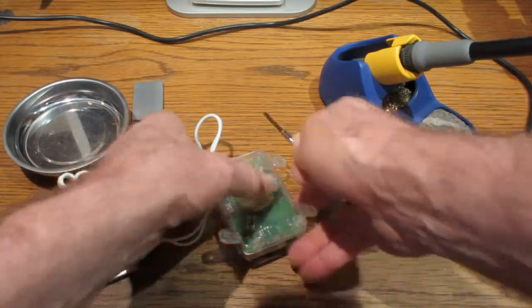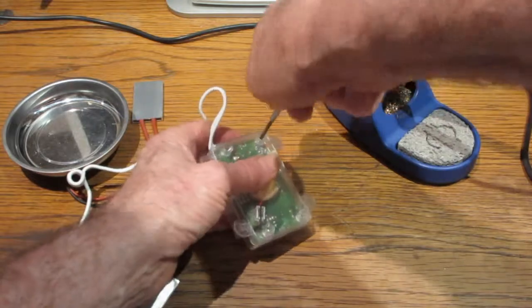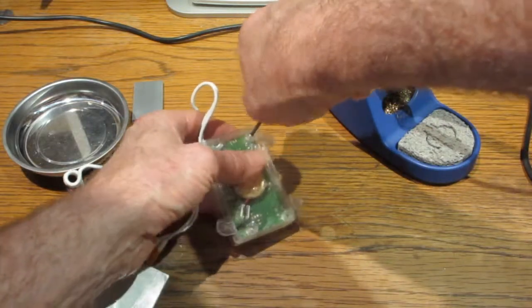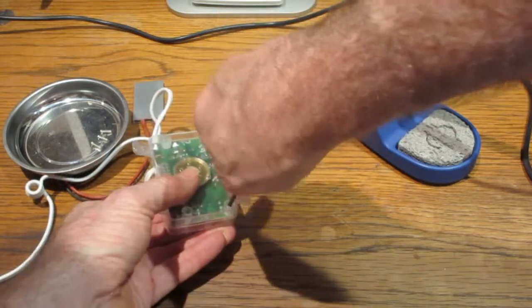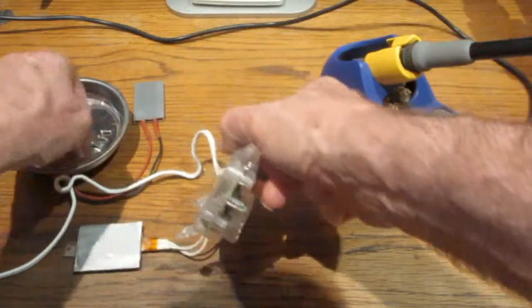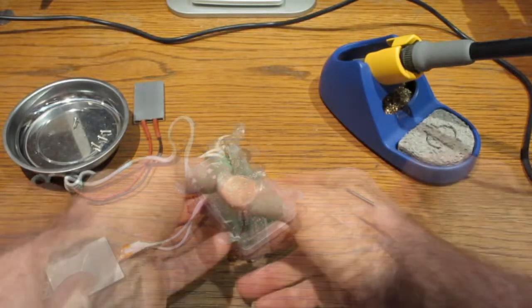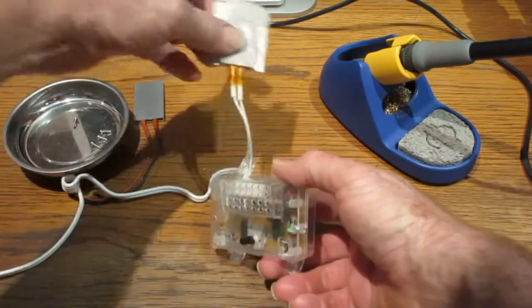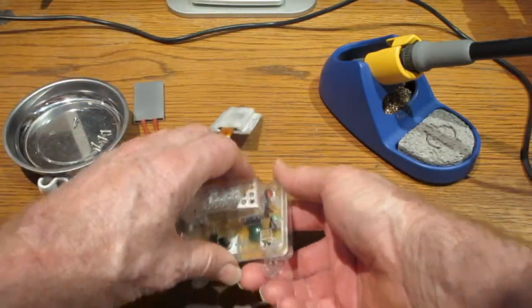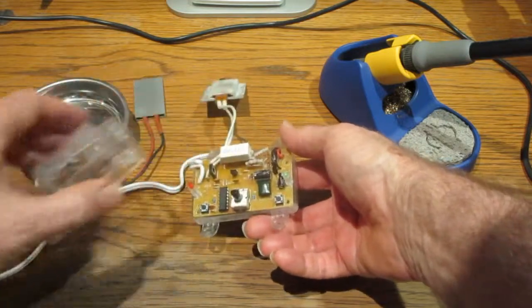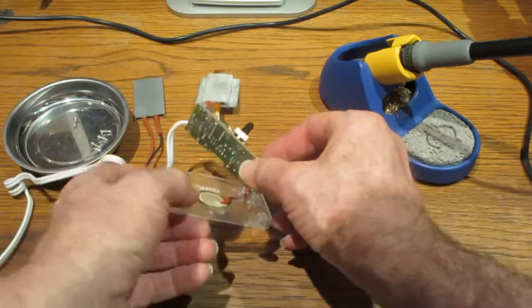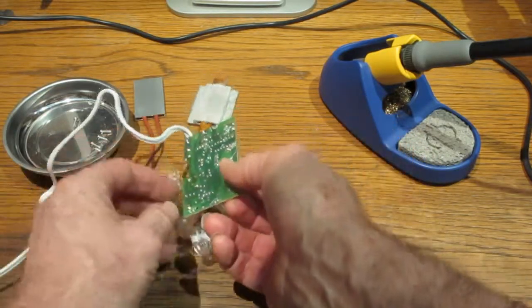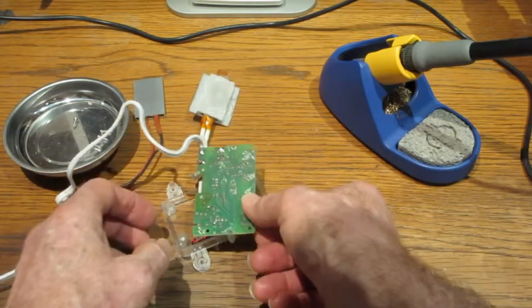The next step is to desolder the damaged heater from the circuit board. Remove the four screws that fasten the two halves of the plastic enclosure. There are two wires that connect the buzzer. Carefully move these aside to gain access to the underside of the circuit board.